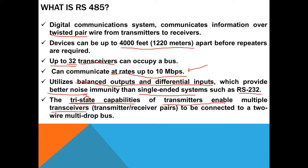Tri-state means three states: set the node as transmitter, set the node as receiver, or set the node as disabled. This is especially useful when you have more than one node and you want to talk only between two of them. For example, if you have node one, node two, and node three but want to talk only between node one and node three, node two needs to be disabled so it doesn't interfere. That's why tri-state allows multiple transceivers to be connected with only two wires in a multi-drop configuration.